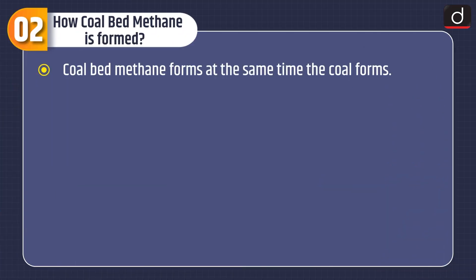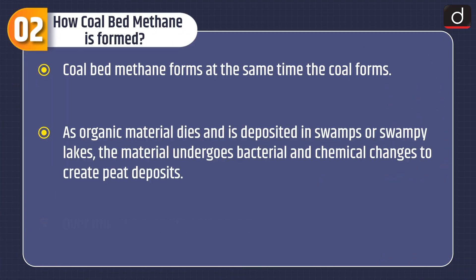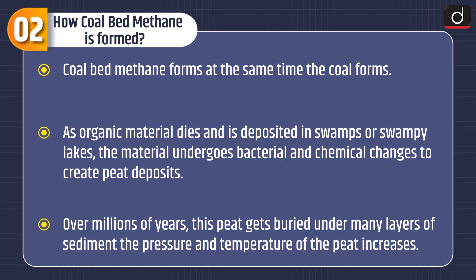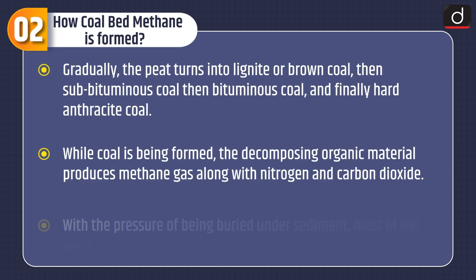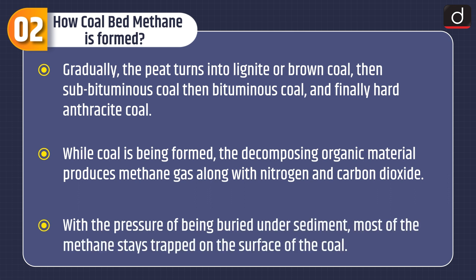Now let's understand how coal bed methane is formed. Coal bed methane forms at the same time the coal forms. As organic material dies and is deposited in swamps or swampy lakes, the material undergoes bacterial and chemical changes to create peat deposits. Over millions of years this peat gets buried under many layers of sediment. The pressure and temperature of the peat increases. Gradually the peat turns into lignite or brown coal, then sub-bituminous coal, then bituminous coal and finally hard anthracite coal.